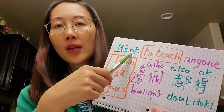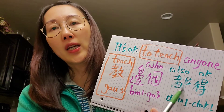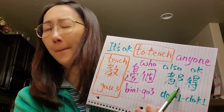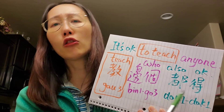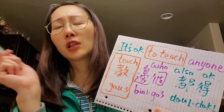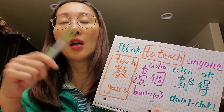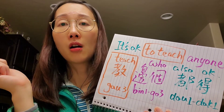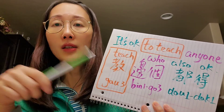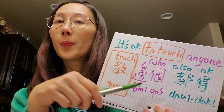Or if it's not okay, we say 都唔得. So 'it's not okay to teach anyone' is 教邊個都唔得. But 'it's okay to teach anyone' is 教邊個都得.